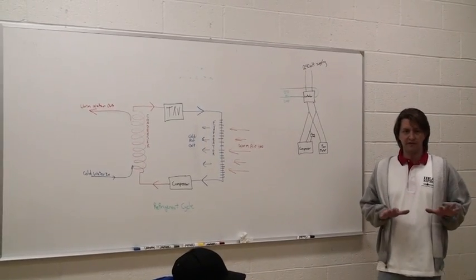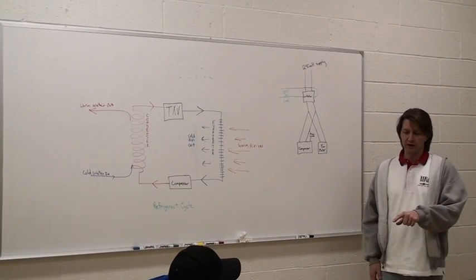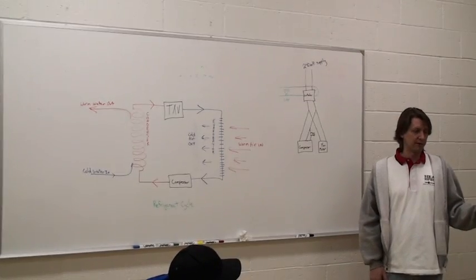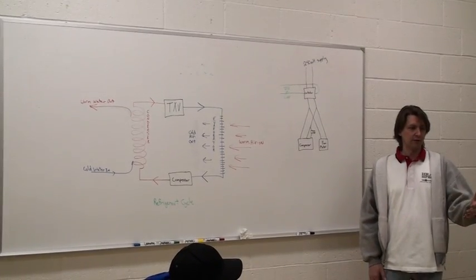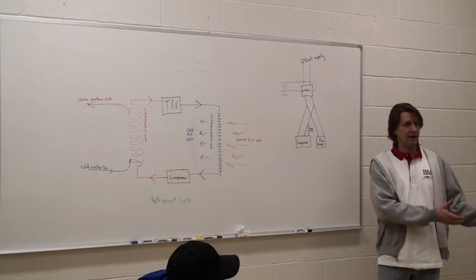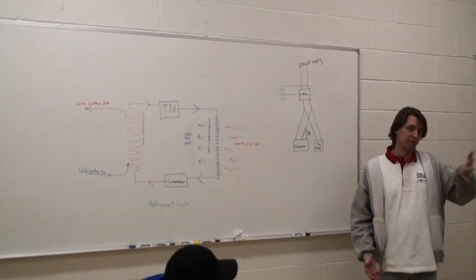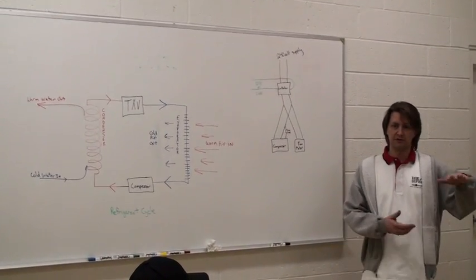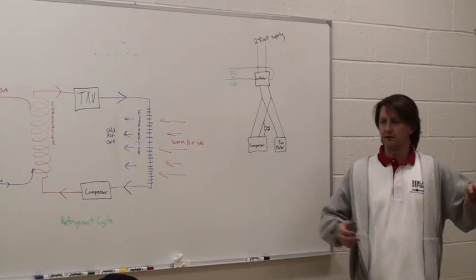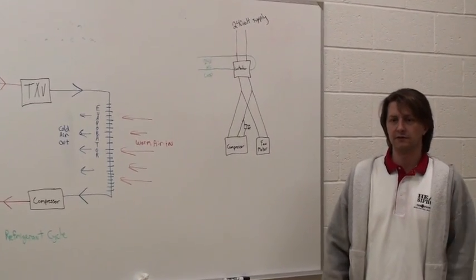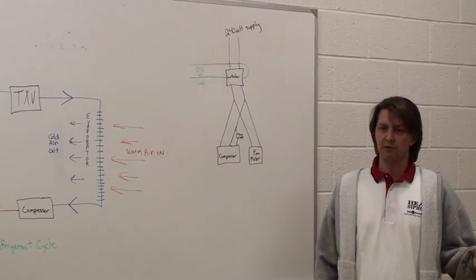We can still manufacture non-410A units, but we have to use R422B, which if you had an R22 unit, you could take the R22 out, put 422B in, and just keep going down the road. The pressures are so close that none of the switches need to change or anything. So they'd say drop-in or replace.